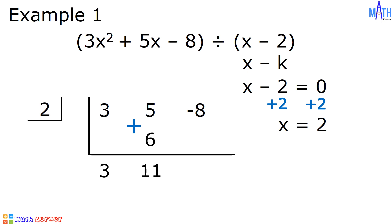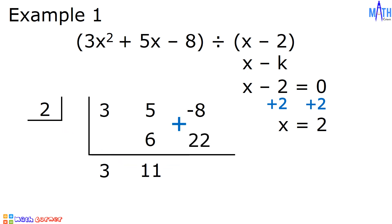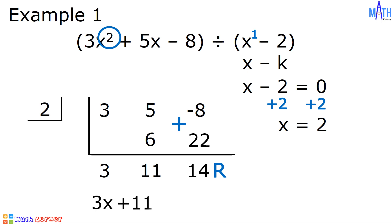We will repeat the process. 2 times 11 is equal to 22. Negative 8 plus 22 is equal to 14. The last number in the third row is the remainder. The remainder here is equal to 14. And since the degree of the dividend is 2 and the degree of the divisor is 1, x squared divided by x gives a degree of 1. So we have 3x plus 11 plus 14 over x minus 2.